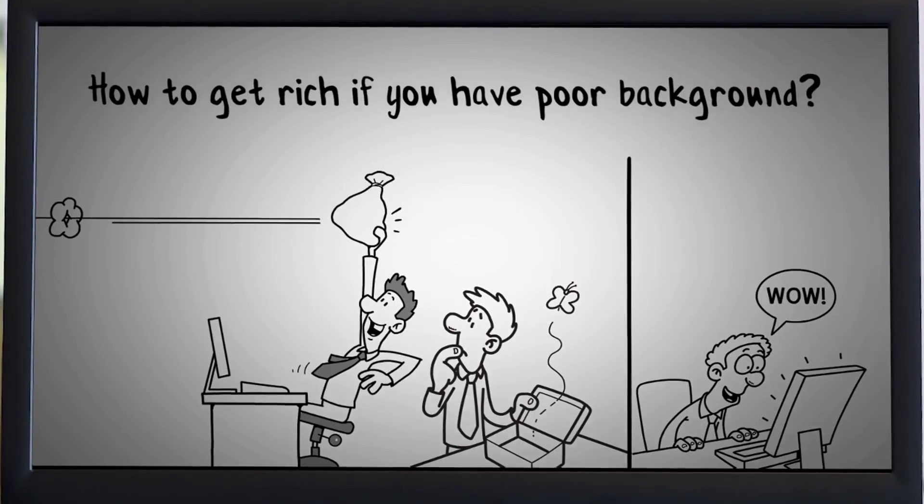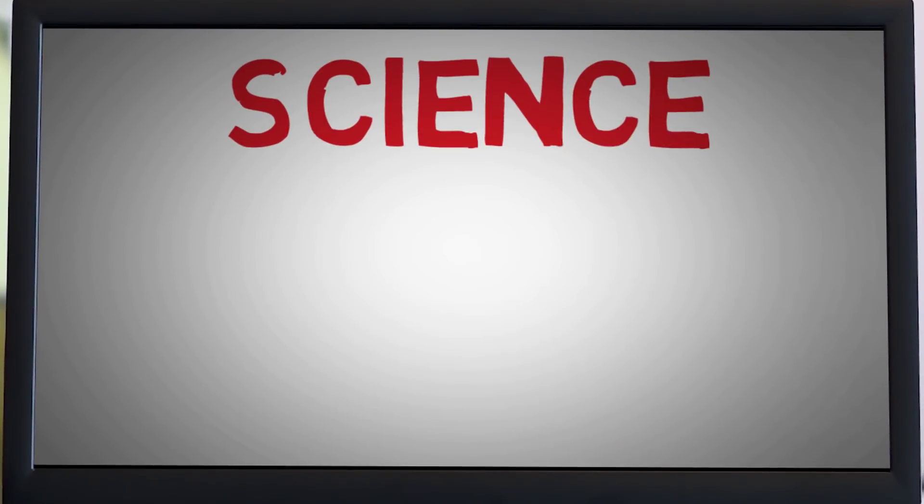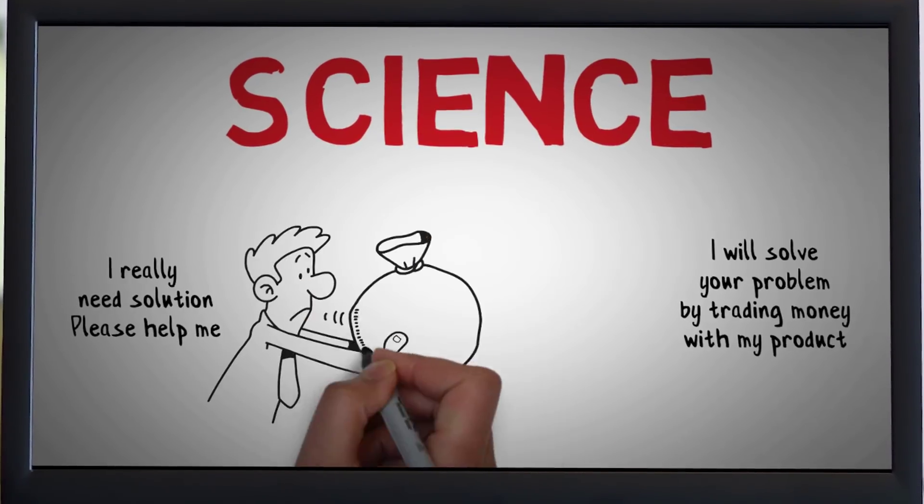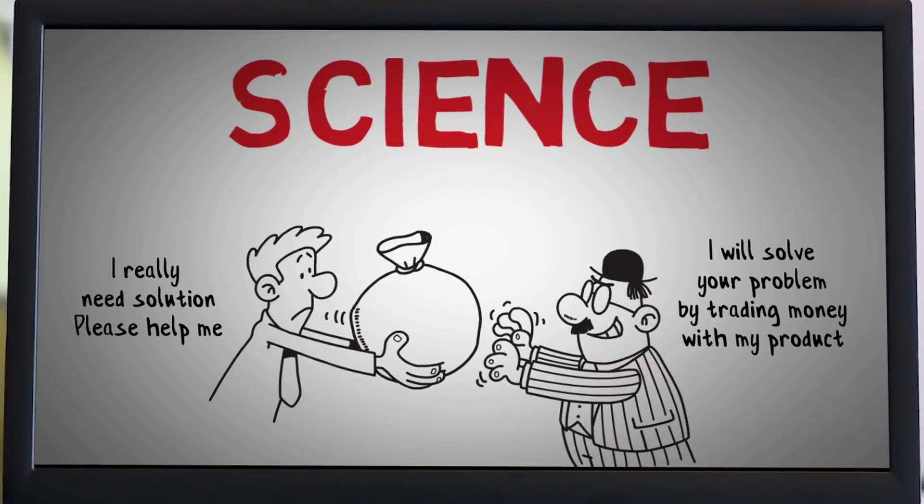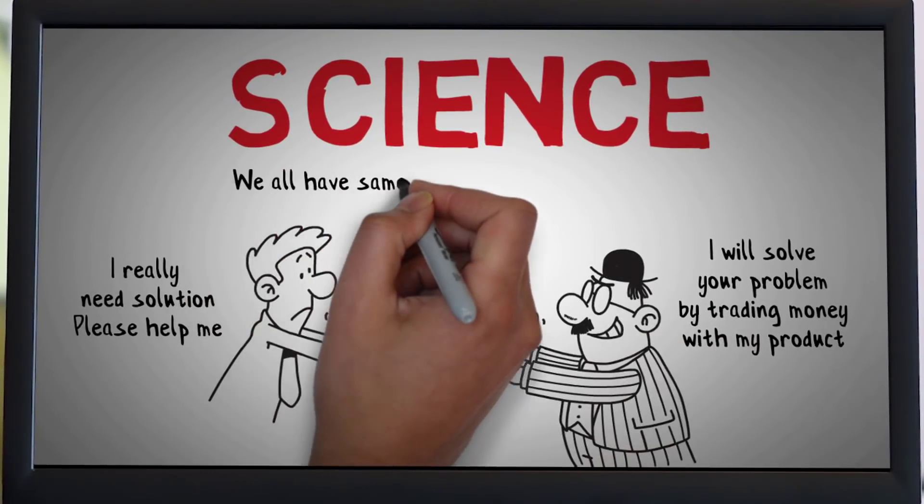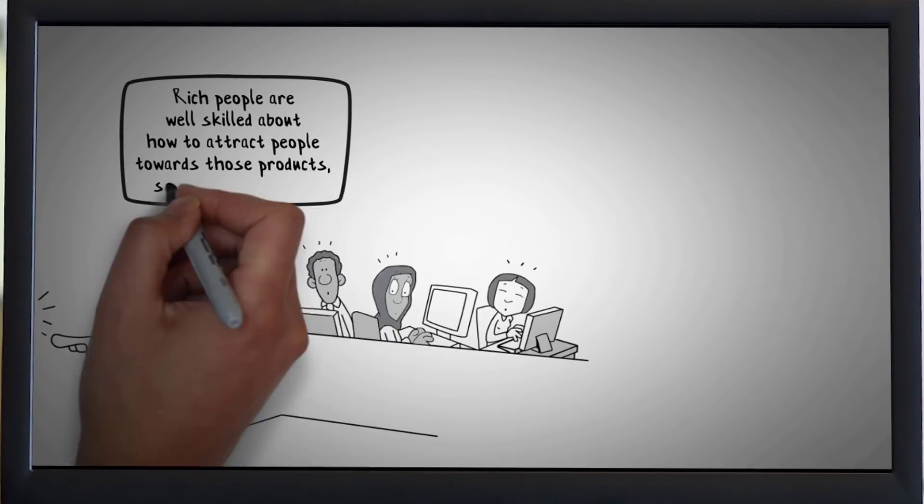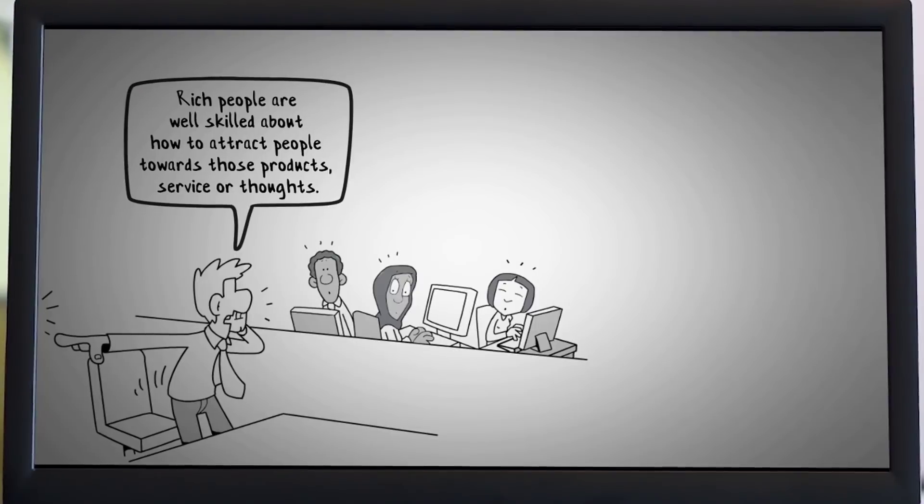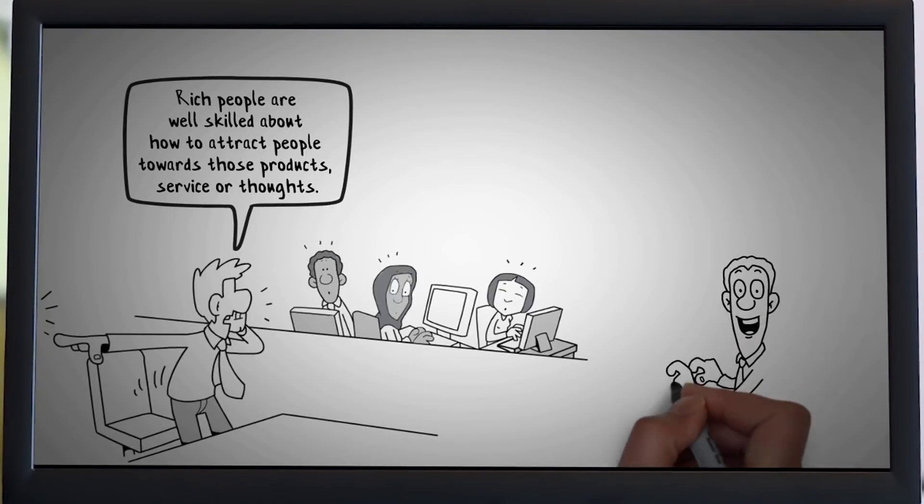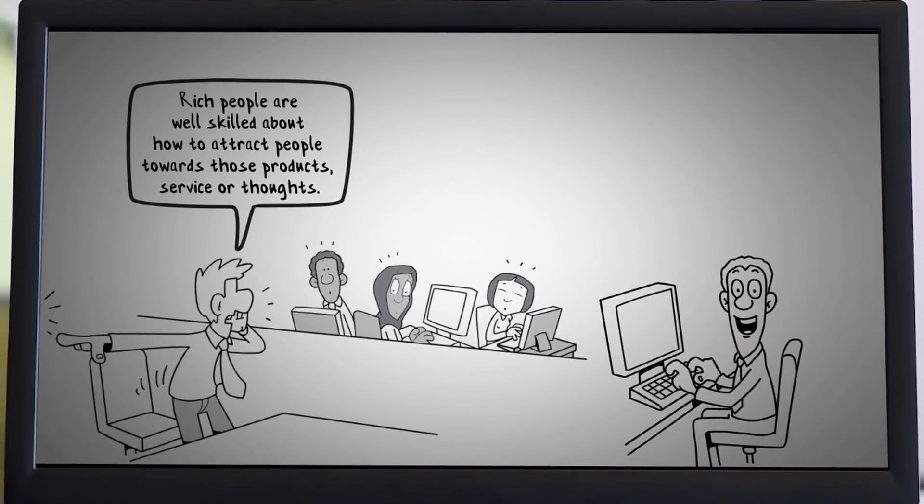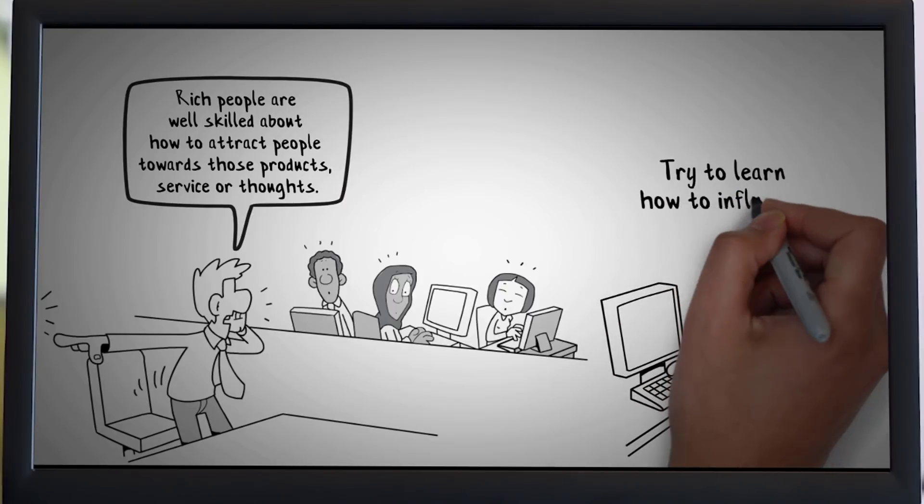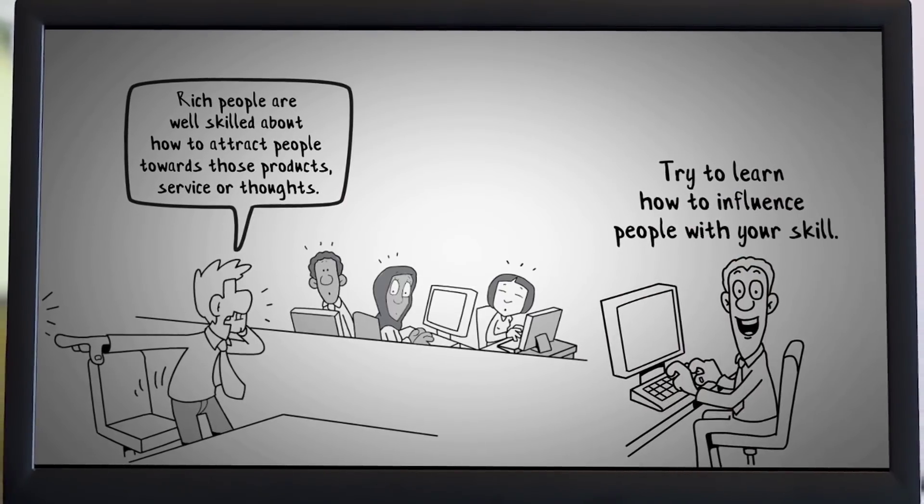How to get rich if you have poor background? According to science, rich people have great influencing skills that make them rich in short time. We all have same hours and time on each day. Rich people are well skilled about how to attract people towards those products, services or thoughts. First and foremost thing is try to learn how to influence people with your skill.